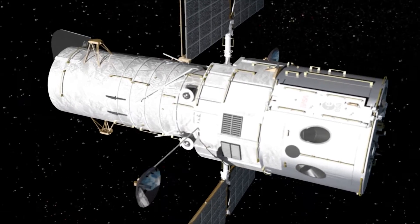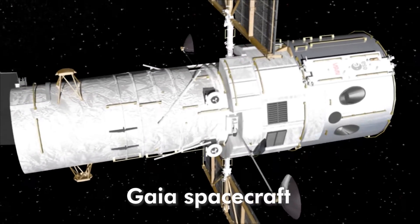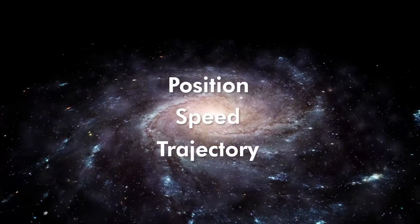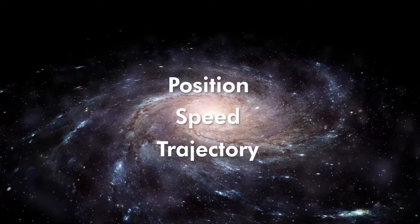They examined data from the European Space Agency's Gaia spacecraft, which is precisely mapping the positions, speeds, and trajectories of approximately 2 billion Milky Way stars.